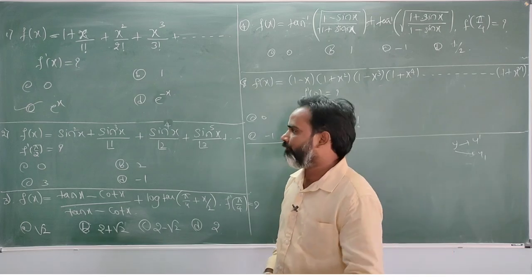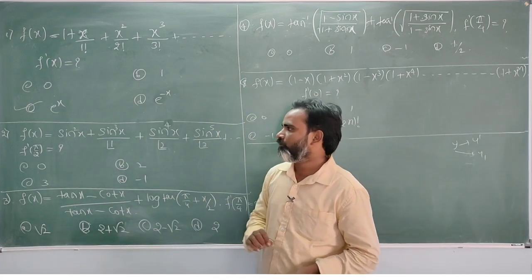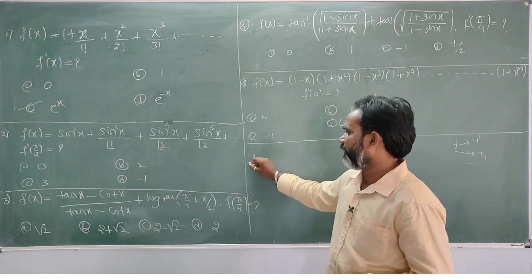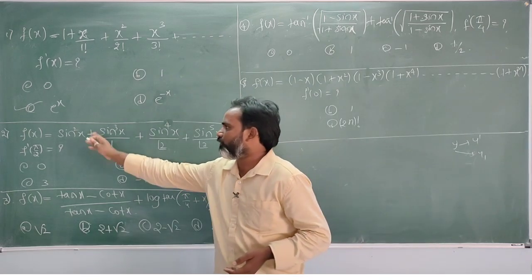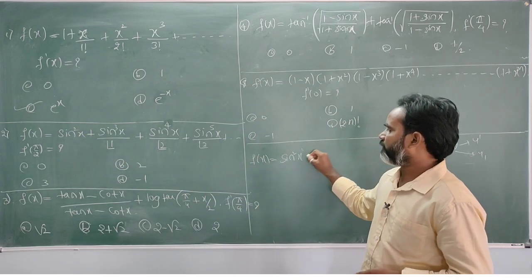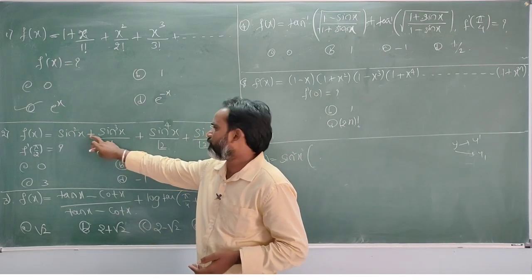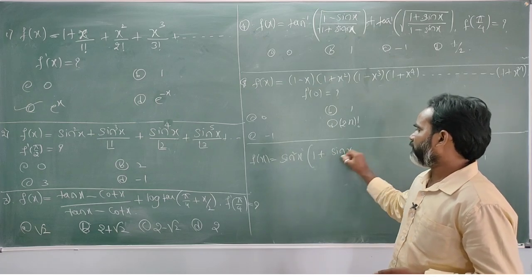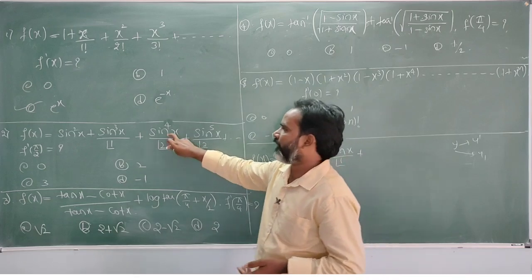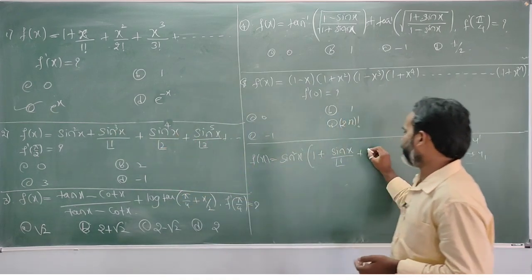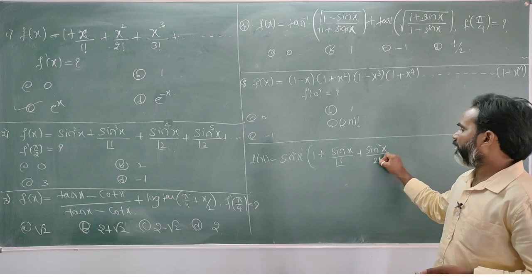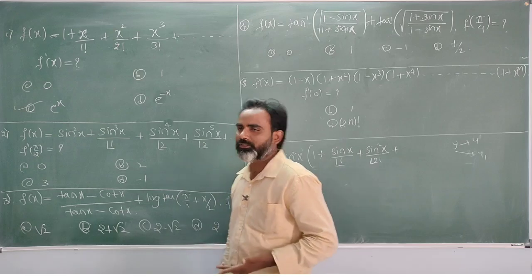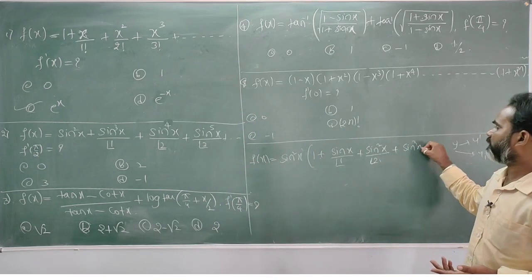Now if you have a problem, you can write f of x with the same series. What is common here? sin squared x is the smallest — take that outside. f of x is equal to sin squared x bracket, 1 plus sin x dividing by 1 factorial, plus sin squared x dividing by 2 factorial.